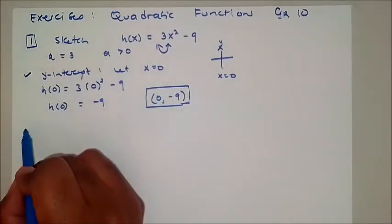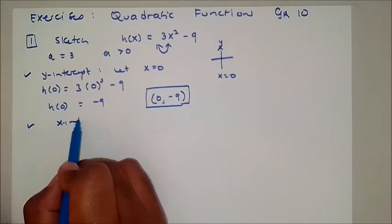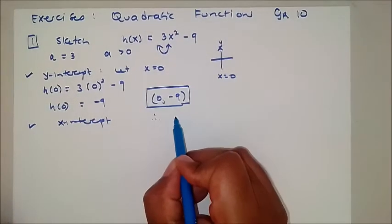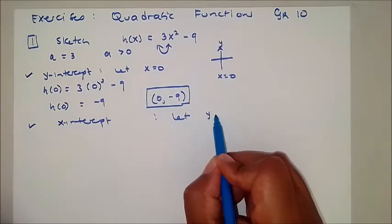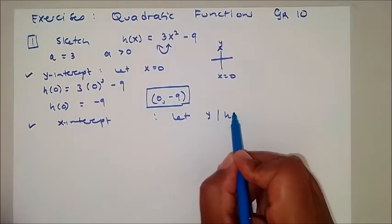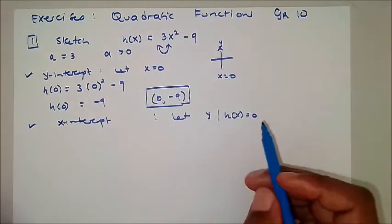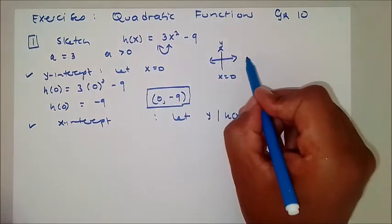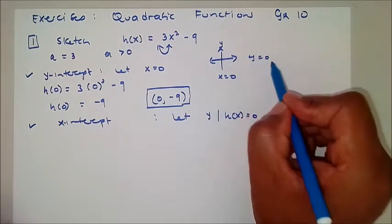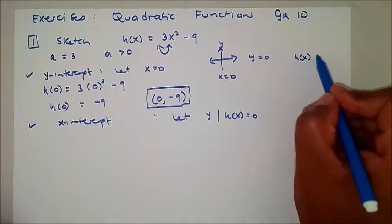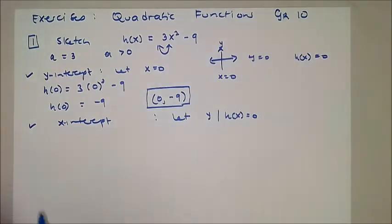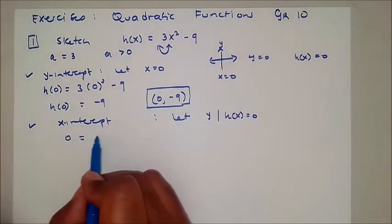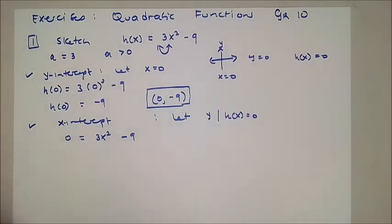Now let's look for the x-intercept. For the x-intercept, we let H of x equal to 0, because the equation of the x-axis is y equals 0. So we set 0 equal to 3x squared minus 9.